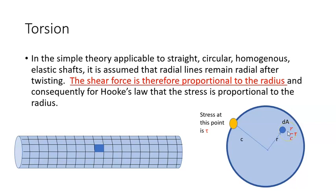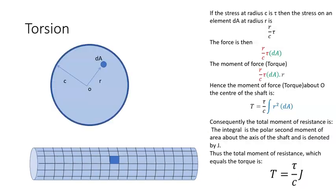Okay, and we're going to use that now to derive our formula. So if we have a small area here, dA, I now know that the stress at that area, at that point, is r over c times tau.